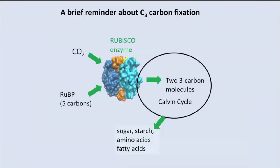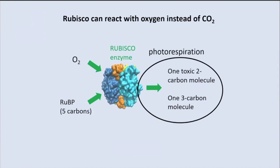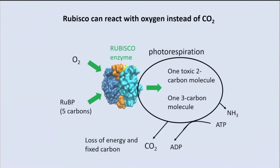I want to do a brief reminder about C3 carbon fixation before I start. Rubisco is the enzyme responsible for combining RuBP and CO2 to create two three-carbon molecules that are utilized in the Calvin cycle, resulting in sugar, starch, amino acids, and fatty acids. But Rubisco can react with oxygen instead of CO2, and when that happens we have photorespiration, in which one toxic two-carbon molecule and one three-carbon molecule are produced, resulting in the release of CO2, loss of energy and fixed carbon, and production of ammonia.